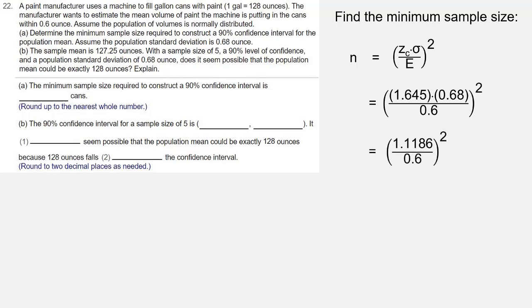So we have 1.645 times 0.68 over 0.6. When we multiply out the numerator, that's 1.1186 divided by 0.6, which is 1.86433333 squared. And when we square that, we get 3.475738778. Rounding up to the nearest whole number, we need at least 4.